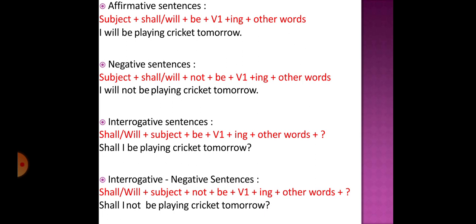For the affirmative sentence in future continuous tense, we use 'shall be' or 'will be' according to the subject, followed by the first form of the verb plus '-ing,' plus other words. For example: 'I will be playing cricket tomorrow.' For the negative sentence, the structure is: subject plus shall/will plus not plus be, plus verb plus '-ing,' plus other words. For example: 'I will not be playing cricket tomorrow.' This makes it negative.